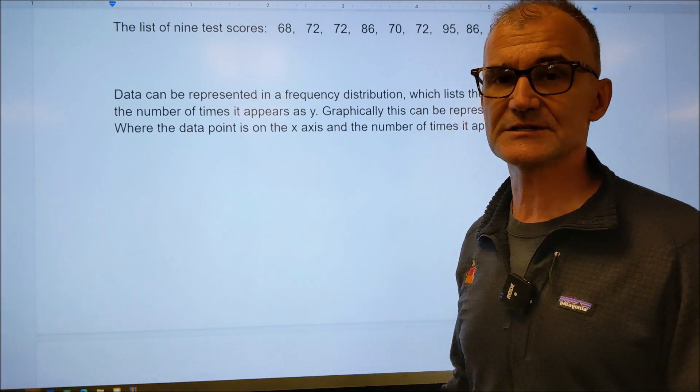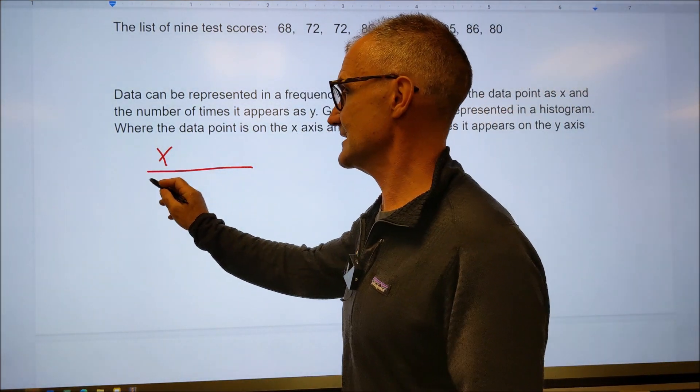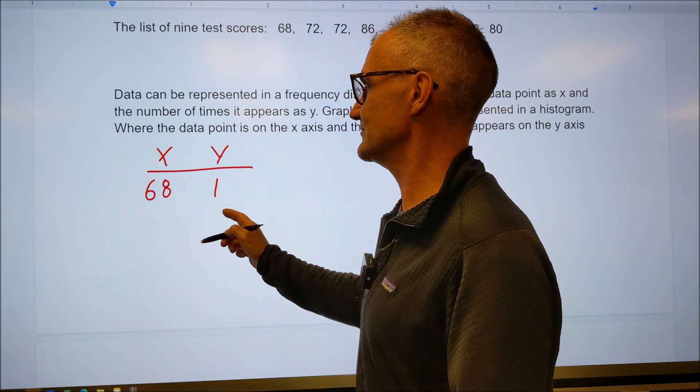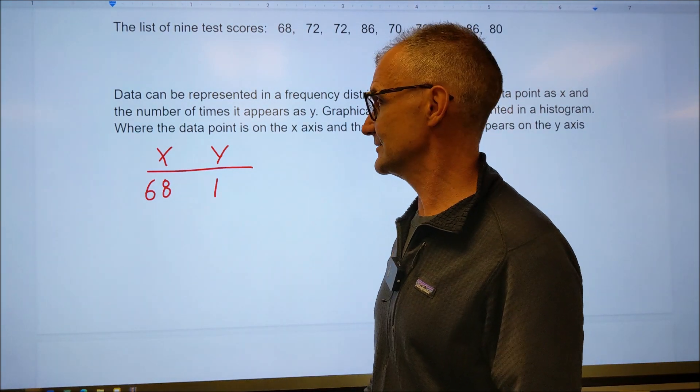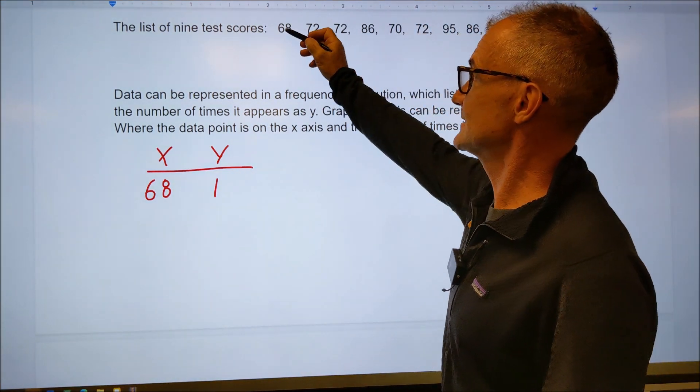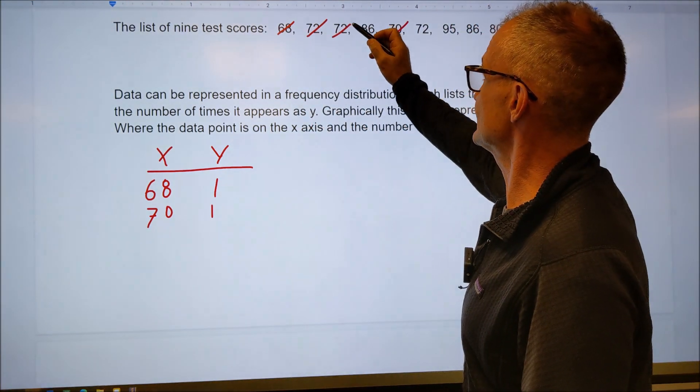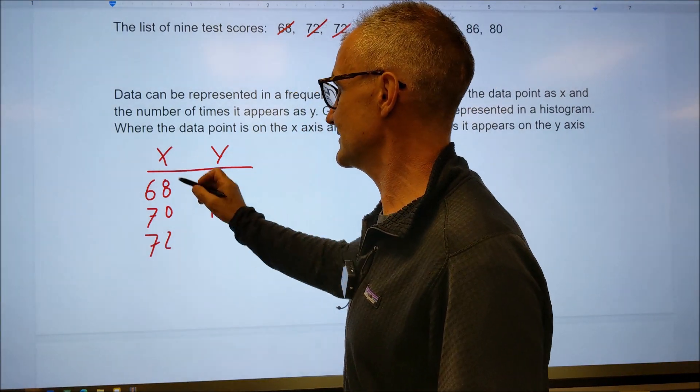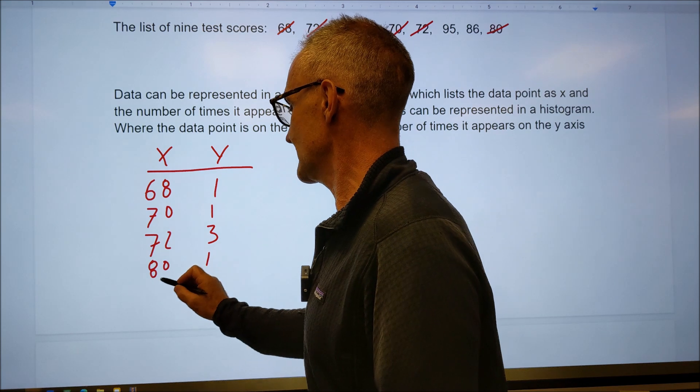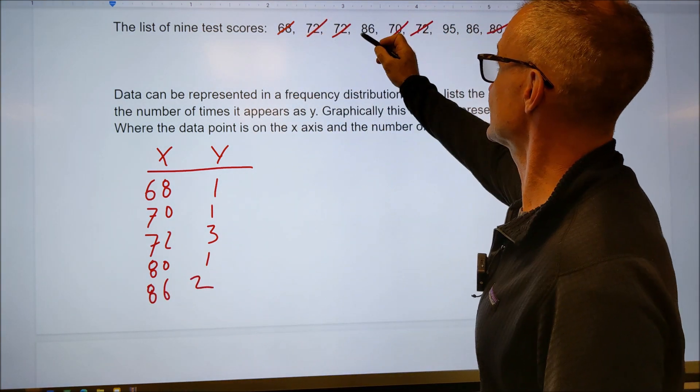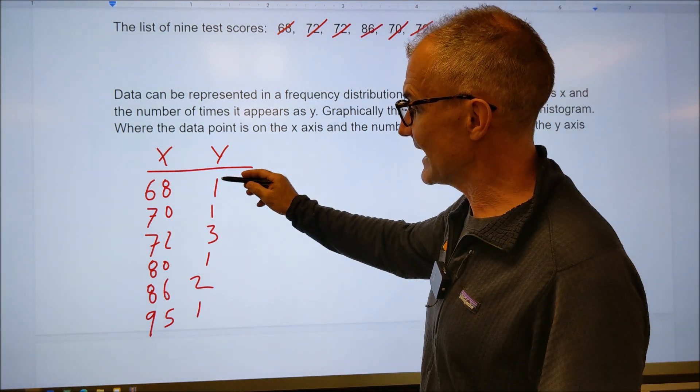All right, next, let's go ahead and look at a frequency distribution. I'll use the same set of data. What a frequency distribution is, is x is going to be the actual value. So like the value of 68 and y is how often it occurs. I only have one value of 68 and that's what a frequency distribution is. So you've got a lot of repeat values. It really helps organize it and sets it up in a table. So let's go ahead and create a table as a set of data. I have one value of 68. The next value in order is 70. There's only one value of 70. Then the next is 72. One, two, three. So 72 is my value and there are three values of 72. Next value is 80. There's only one value of 80. Next value is 86. There are two values of 86. And lastly, my 95. And there's only one value of 95.